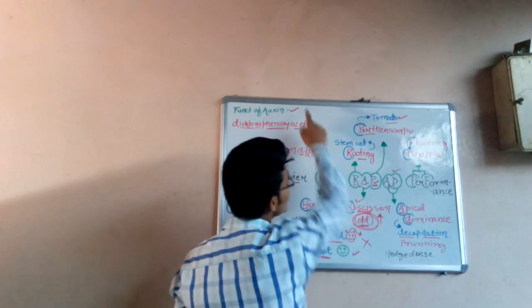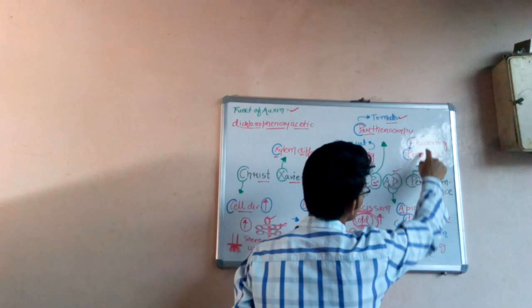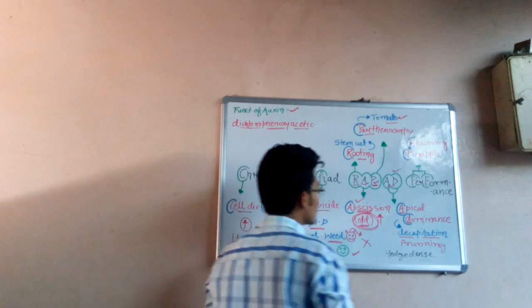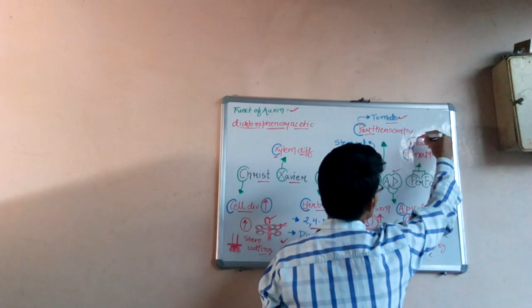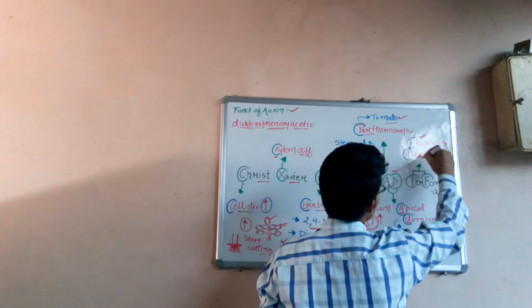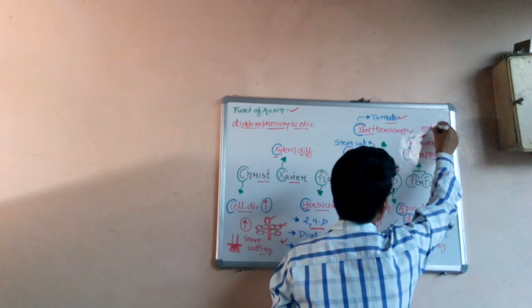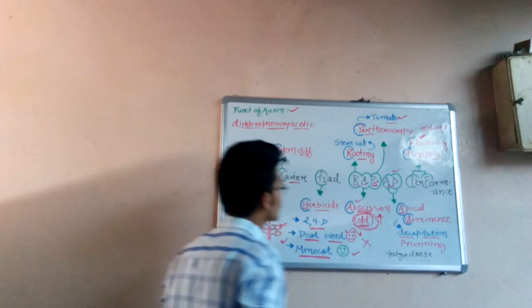So the auxin hormones induce flowering in pineapple. This is a very simple term but it is very important from examination point of view. The flowering in pineapple is induced with the help of auxin.